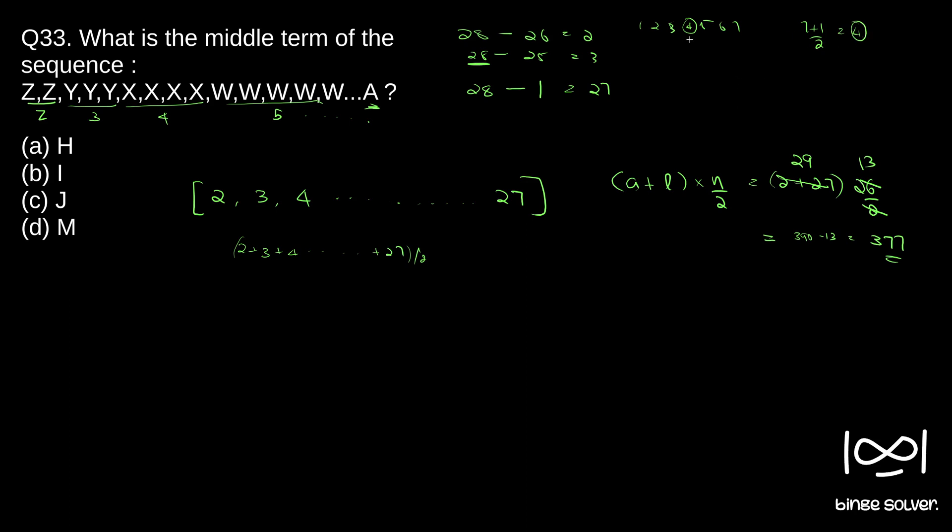So this is how we find the middle term. So similarly, we have 377 terms. So 378 by 2 is 199. So 199th term is the middle term. So we got our 199 as the middle term.